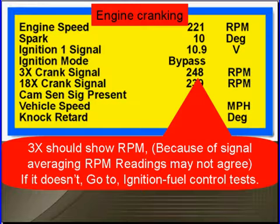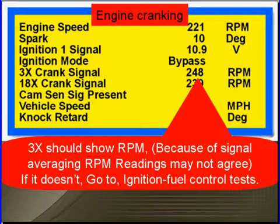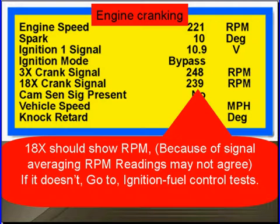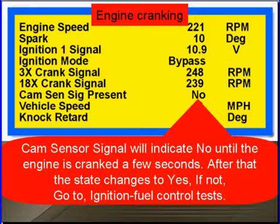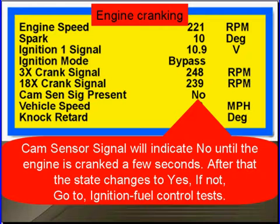The 3x signal should show RPM. Because of signal averaging, the readings may not agree with other RPM signals — the 18x, 3x, and engine speed don't necessarily have to agree. If the 3x doesn't show RPM, go to ignition fuel control test. The 18x should show RPM; if it doesn't, go to ignition fuel control test. Cam sensor signal will indicate no until the engine is cranked a few seconds, after which the state changes to yes — if not, go to ignition fuel control test.